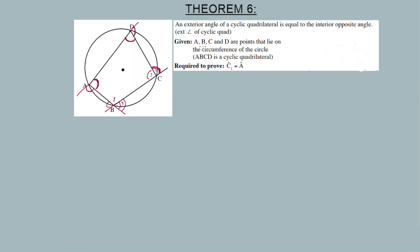For the proof, we are given points A, B, C, and D which lie on the circumference of the circle, making the quadrilateral a cyclic quad. We are required to prove that C1 is equal to A. There is no construction needed for theorem six — we use theorem five to work with C2 plus angle A.